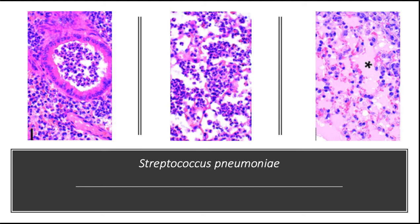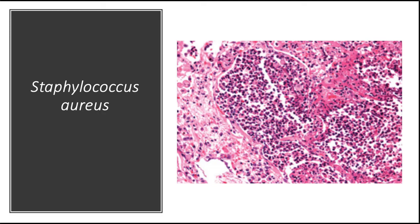On the left and middle pictures, you see acute bronchopneumonia; on the right picture, severe alveolar edema is marked with an asterisk. Staphylococcus aureus is an important cause of secondary bacterial pneumonia in children and healthy adults after viral respiratory illnesses such as measles in children and influenza in both children and adults. Staphylococcal pneumonia is associated with a high incidence of complications such as lung abscess or empyema, and is also an important cause of nosocomial pneumonia.